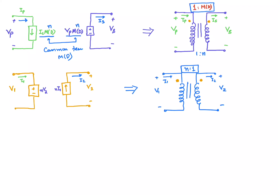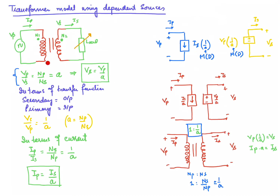To conclude: we have learned how to model a transformer using dependent sources. A transformer can be represented by one dependent current source and one dependent voltage source. The common factor between them defines the turn ratio. If the current-dependent source is on the input side, the ratio is 1 : common factor; if the voltage-dependent source is on the input side, the ratio is common factor : 1.